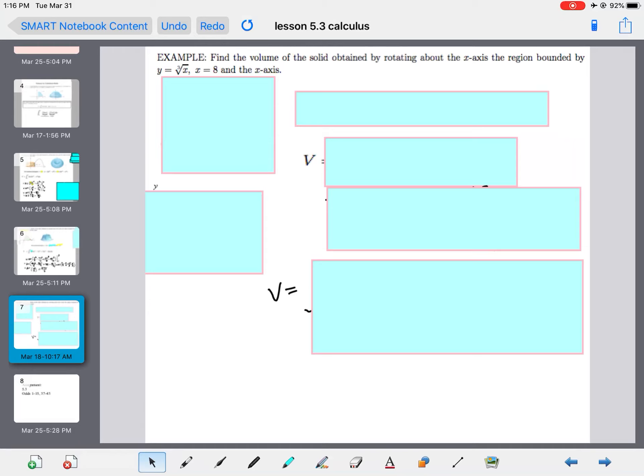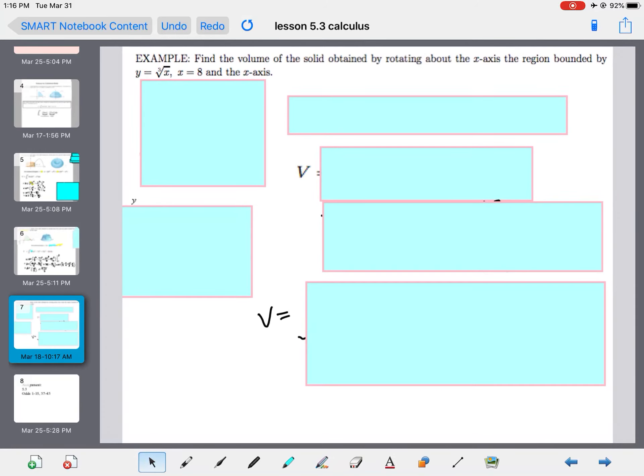So, in this example, it says, find the volume of the solid obtained by rotating about the x-axis, the region bounded by y equals, and that's the cube root of x, and x equals 8, about the x-axis and the x-axis. So, first thing we want to do is look at a picture. So, here's a picture. That is what it looks like from 0 to 8, the cube root, and the x-axis. The other piece, there is a piece on the other side, but we're only looking from 0 to 8.